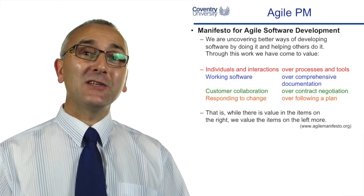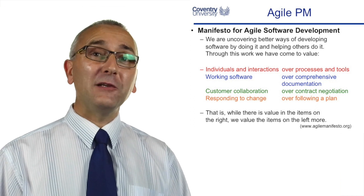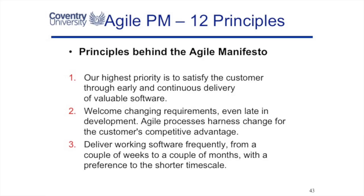Agile is saying that although the things on the right are important, we value the things on the left more. Agile has published a 12-principle manifesto. The highest priority is satisfying the customer with continuous delivery of software, and we're going to use those showcases to deliver working software.